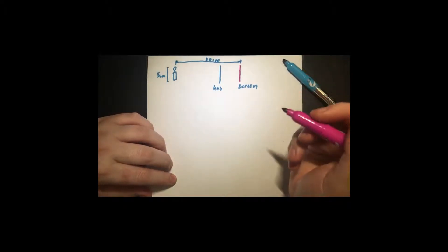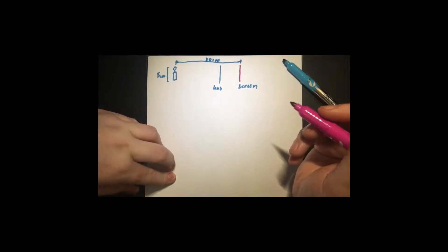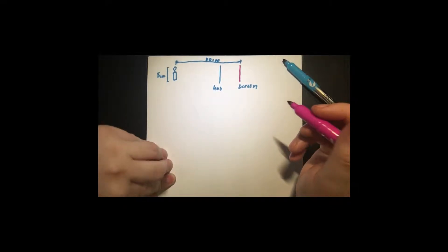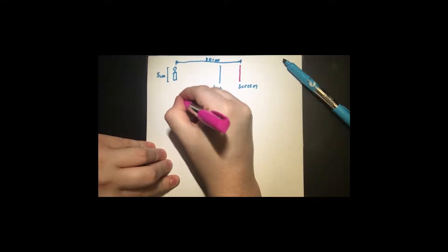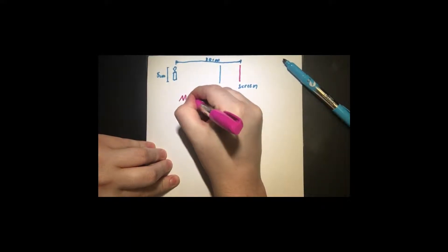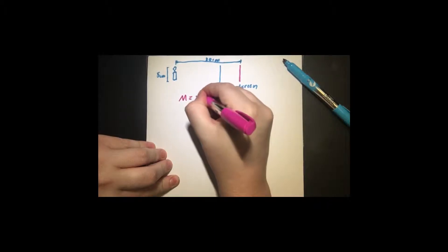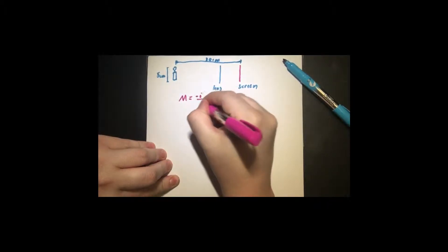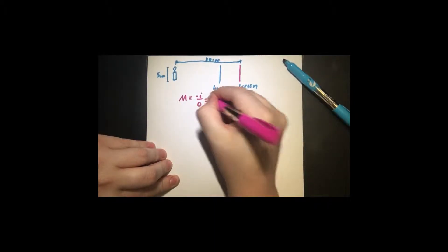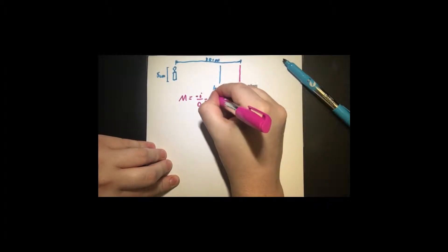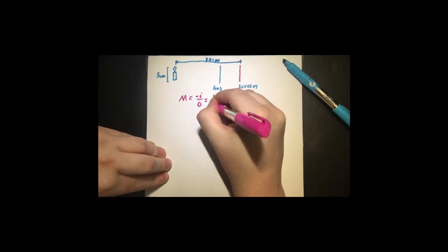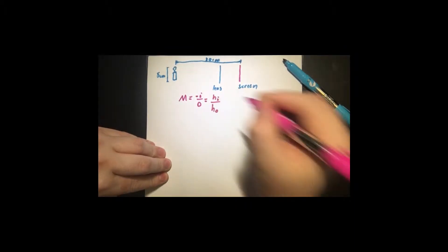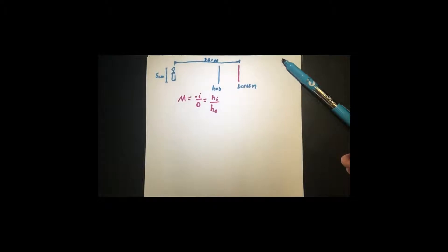Before we do anything, let's make sure we know the equation because we're going to have to use it. Magnification in optics is the negative of the image distance over the object distance, or the height of the image over the height of the object. We're going to use this for our magnification.